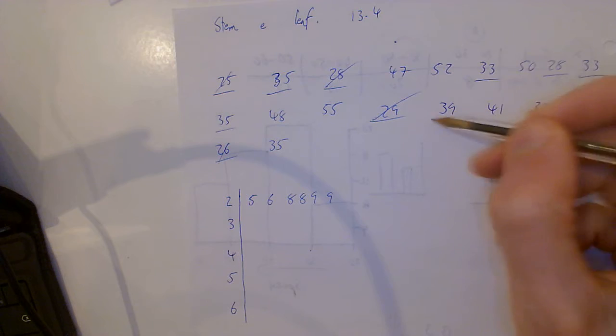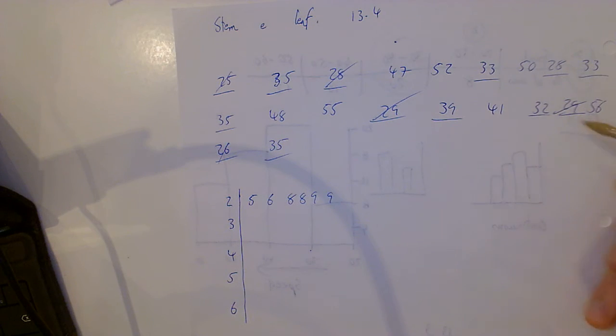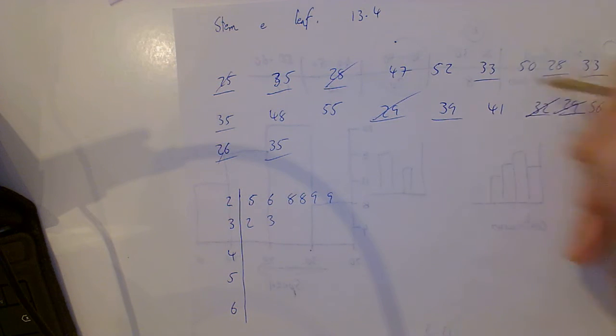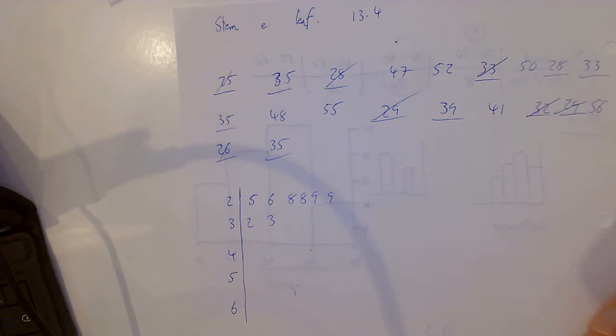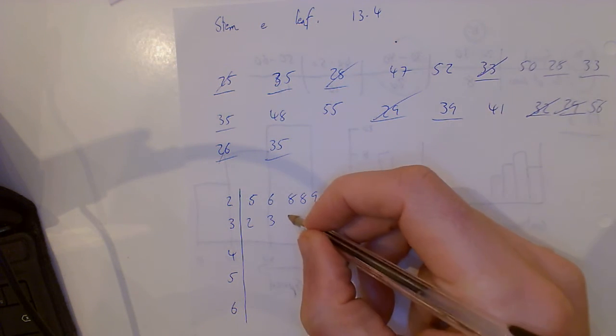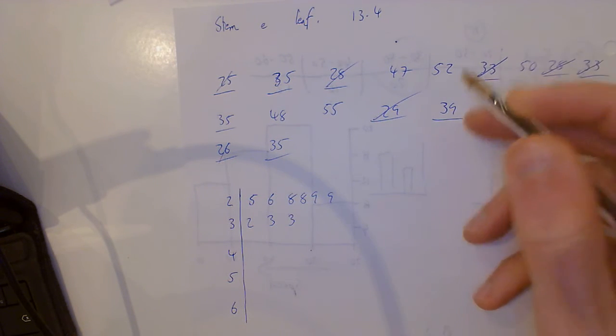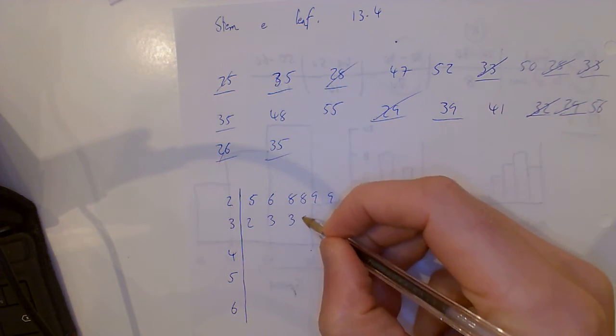35, 39, 35, 32. Our lowest in the 30s is 32, and there's a 33. Mark them off as you go. There's a 33 there as well. Then three 35s.